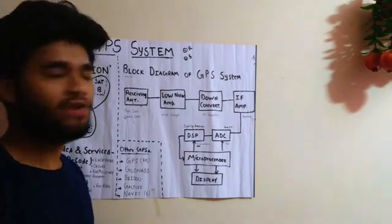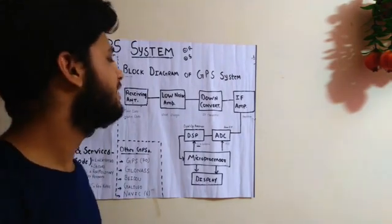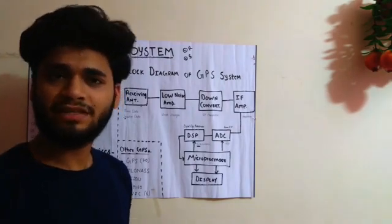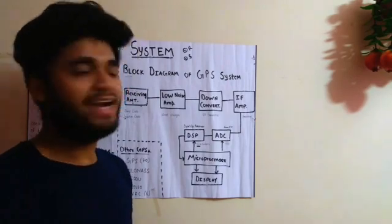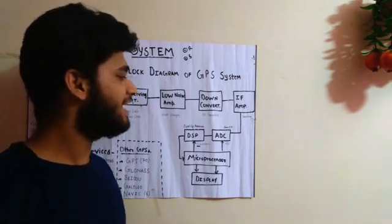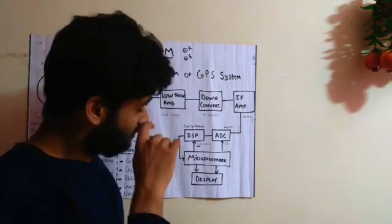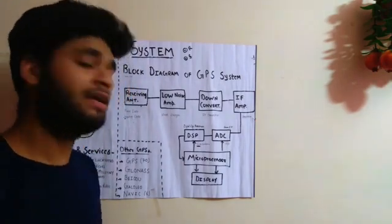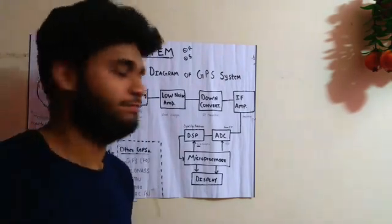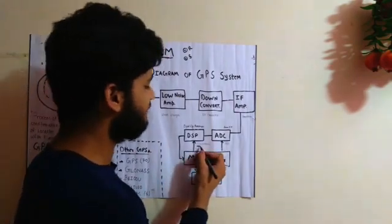The signal is then sent to the Low Noise Amplifier, which amplifies the weak signal. It is then sent to the down converter, where the signal is converted into intermediate frequencies — frequencies suitable for further processing. These frequencies are then amplified in the IF amplifier. From the IF amplifier, the amplified intermediate frequencies are sent to the ADC, where the analog part is converted into digital form. That digital signal is sent to the DSP — Digital Signal Processor — which is an important block where the GPS codes are extracted. Here the signal is checked whether it is a CA code or P code.